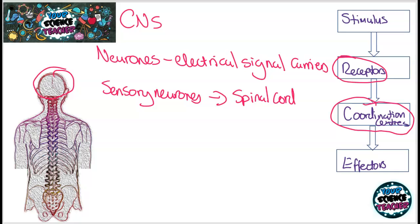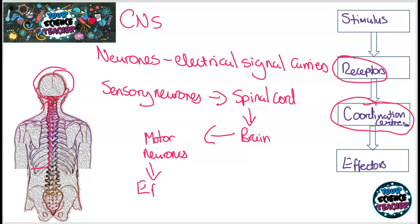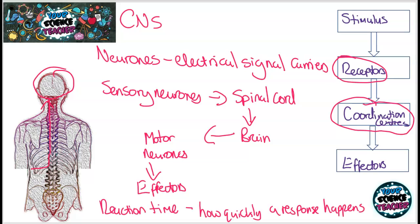The spinal cord then sends this signal all the way up to the brain. Once it's reached the brain, the brain creates a response, and that response is called your reaction time. You can actually carry out reaction time tests using a ruler — if you want to learn more about how to carry out a reaction test, refer to my required practicals video for paper two. Once your brain has figured out a response, it needs to send that signal back to the effectors, and that signal is carried by motor neurons, the other type of neuron, before being sent to the effectors where that response is carried out — for example, shivering.